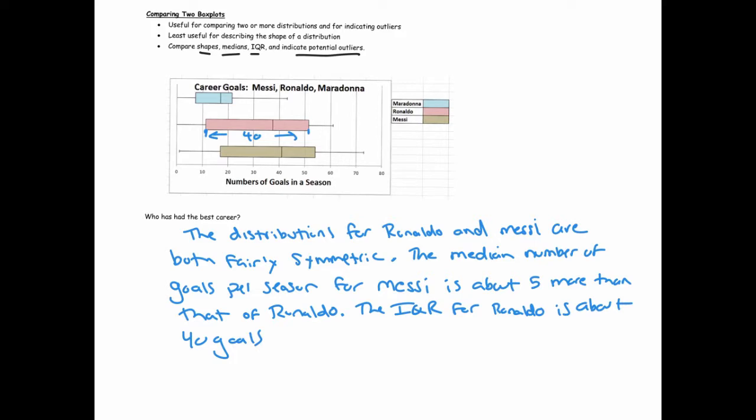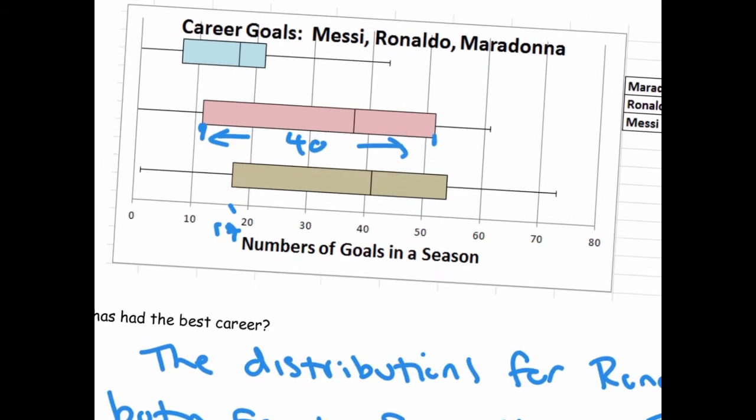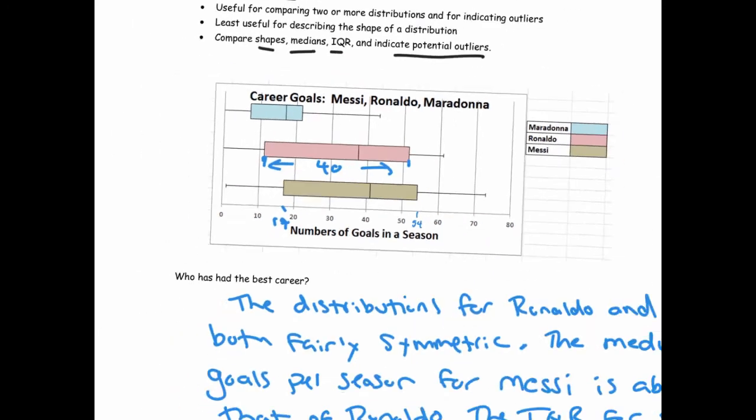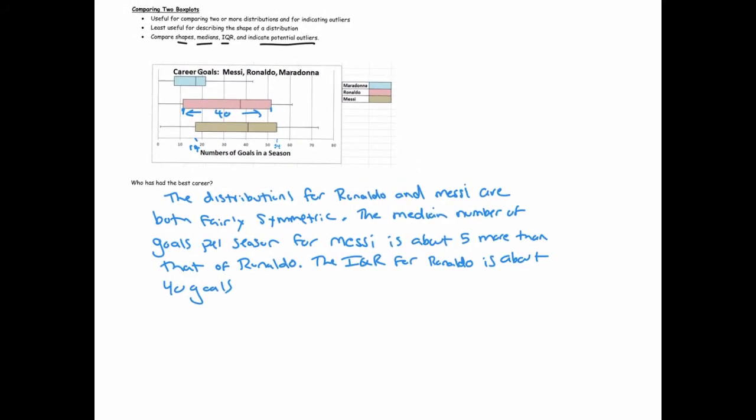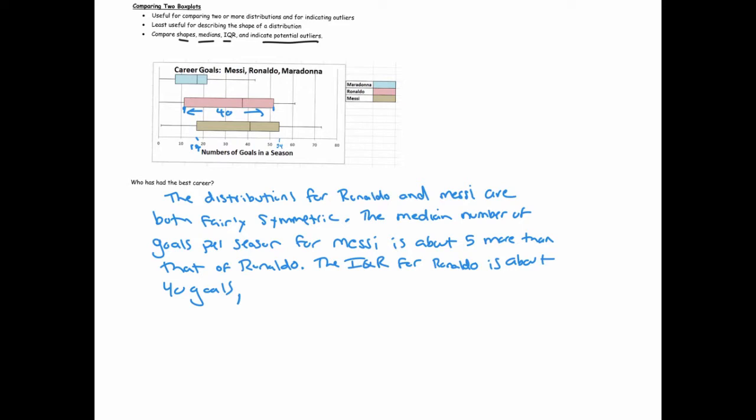And for Messi, his goes from, this looks like it's, like, let's say 17, and it goes up to about, let's zoom in here a little bit, 17, and it goes up to roughly maybe 54. So if you do that subtraction, 54 minus 17 is 37. So I'll indicate that. So the IQR for Messi is slightly smaller.